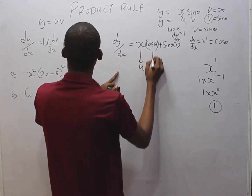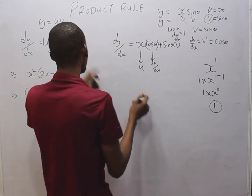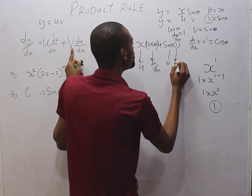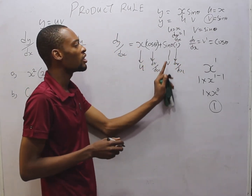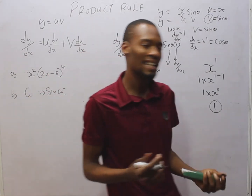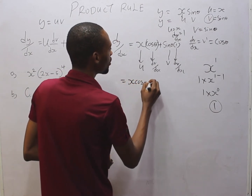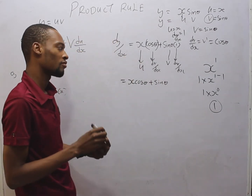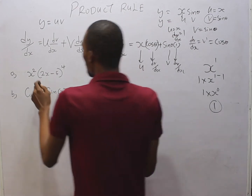So we have sin(θ) times 1. Putting it all together: keep the first constant and differentiate the second, plus keep the second constant and differentiate the first. This simply gives x·cos(θ) plus sin(θ). That is the answer — simple, right?